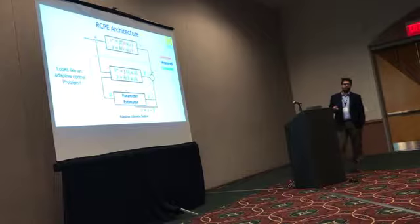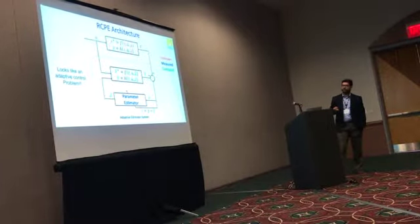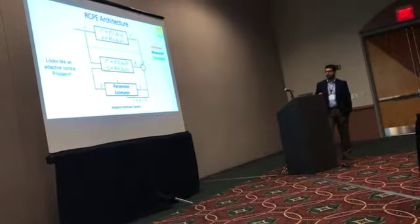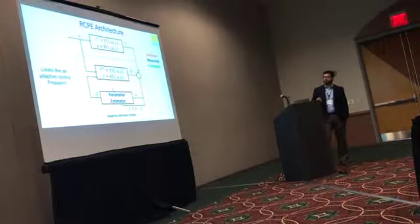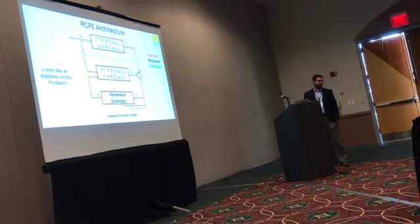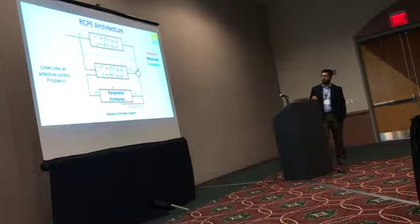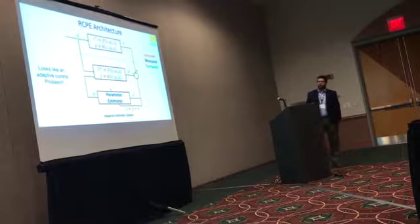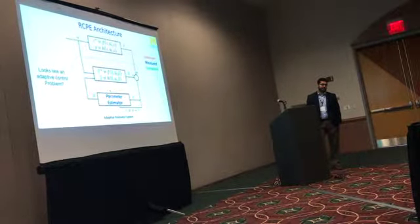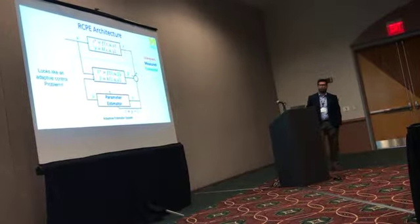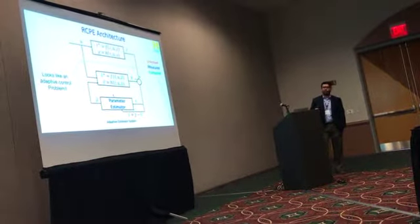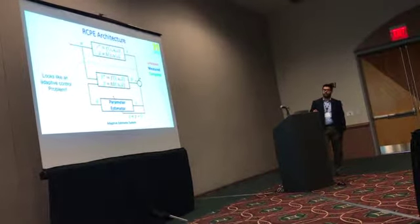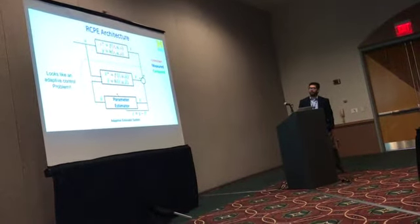The approach is: we drive the physical system with an input that produces an output. We use the model of that system with an estimate mu-hat of the unknown parameter, which produces an estimated output that won't initially match the physical output. We compute the output error z, which is Y minus Y-hat, and use that error to drive and update the parameter estimator to produce a better estimate mu-hat. The hope is that mu-hat converges to mu and Y-hat converges to Y.